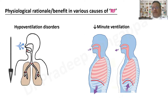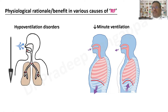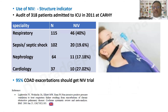In hypoventilation disorders, HFNO cannot make a difference. NIV is the standard of care for hypoventilation disorders and for optimizing minute ventilation. HFNO has absolutely no role in strengthening or enhancing muscle function. In conditions like myasthenia gravis, motor neuron disease, or other neuromuscular conditions, NIV stands as the bridge therapy, and only NIV holds promise here.